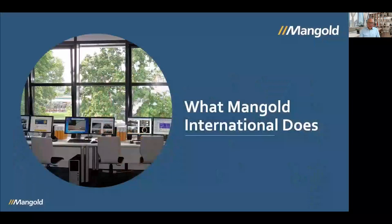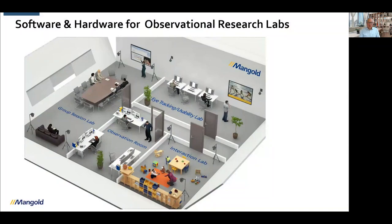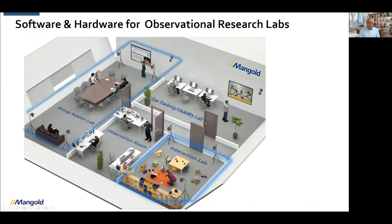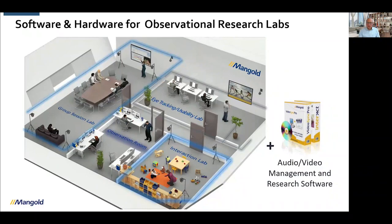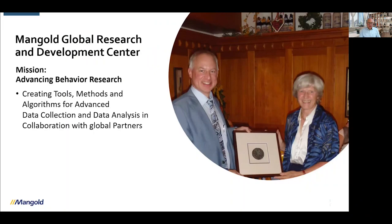What we do is create software and hardware for observational research labs. If you have an interaction lab where you want to observe mother and child interactions, or a group session lab where you want to work with adults, or you do some kind of eye tracking, you always need an observation room. In that room you need equipment to record all cameras and microphones to do good observational studies. This requires specialized software for audio and video management, data collection, and data analysis.